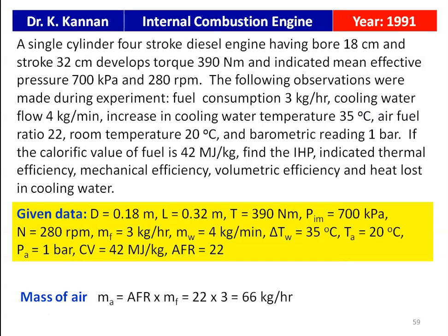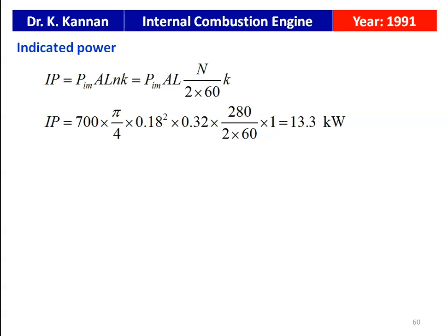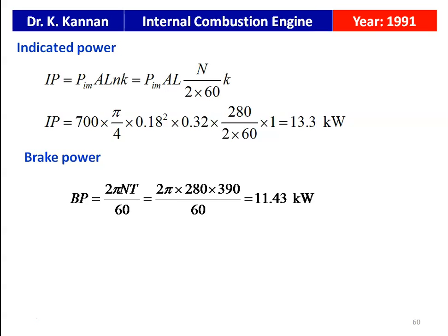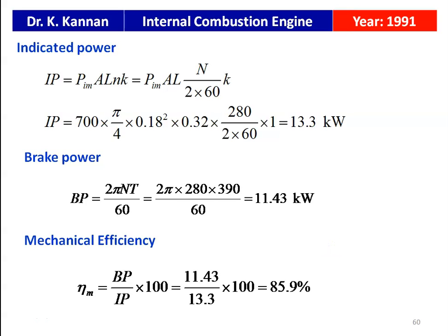Mass of air = air-fuel ratio × mass of fuel = 22 × 3 = 66 kg/hr. Indicated power IP = Pim × (π/4)D² × L × (N/2)/60 × k = 700 × (π/4) × 0.18² × 0.32 × (280/2)/60 × 1 = 13.3 kW. Brake power = 2πNT/60 = 2π × 280 × 390 / 60 = 11.43 kW. Mechanical efficiency = BP / IP × 100 = 11.43 / 13.3 × 100 = 85.9 percent.